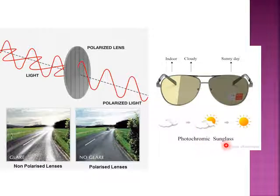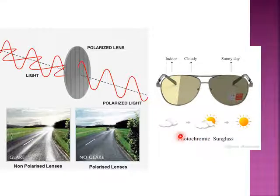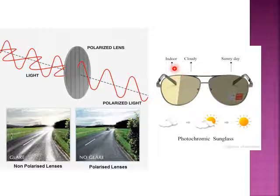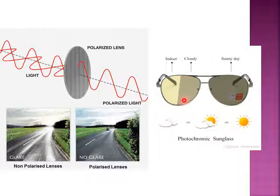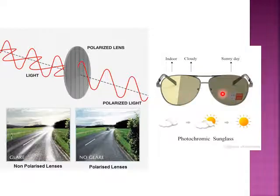In photochromic sunglasses, 'photo' stands for light and 'chromic' means colour. Depending on the light intensity, the colour of the glasses changes — this is called the photochromic mechanism. Indoors, the glass appears to be bright or clear. On a cloudy day, it turns to a greyish colour. On a sunny day, it turns to dark black colour. So depending on the light intensity, the colour of the glasses changes.